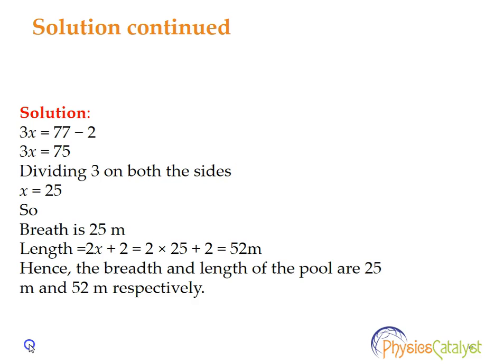Dividing both sides by 3, we get x = 25. So the breadth is 25 meters. The length will be 2x + 2, which equals 2 × 25 + 2 = 52 meters. Hence, the breadth and length of the pool are 25 meters and 52 meters respectively.